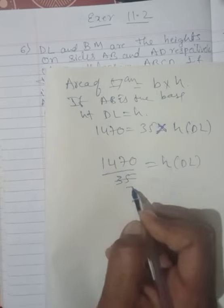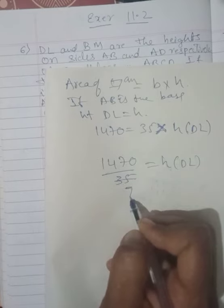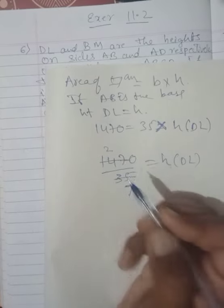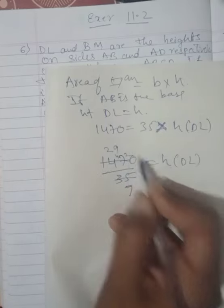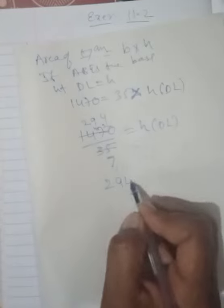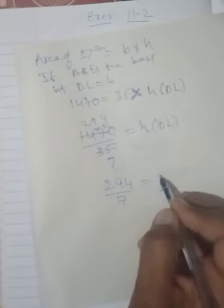Simple, by 5 I will cut. 5 sevens are 35. 5 twos are 10. 4 remains. 5 nines are 45. 2 remains. 5 fours are 20. See here children, 294 upon 7 is equal to DL.